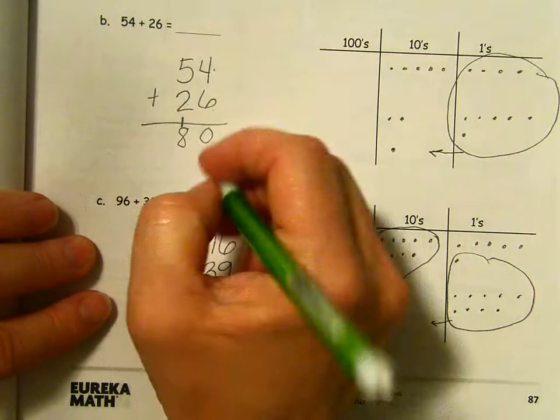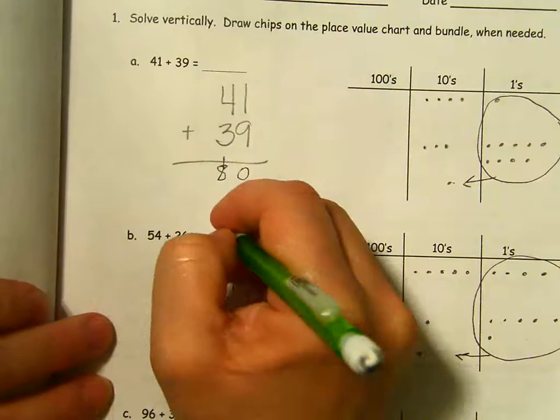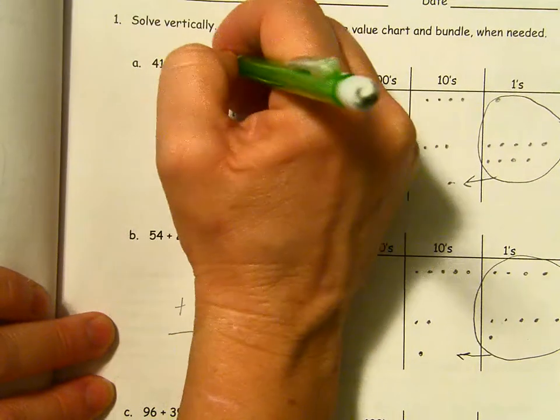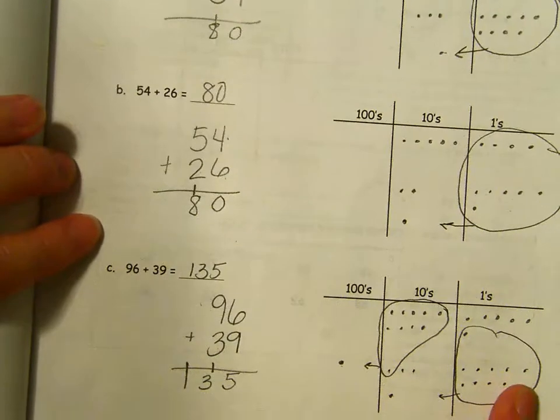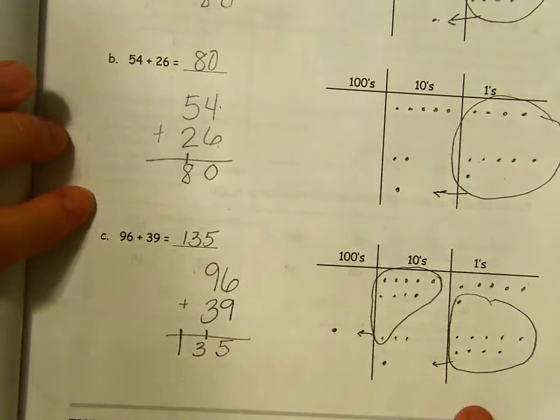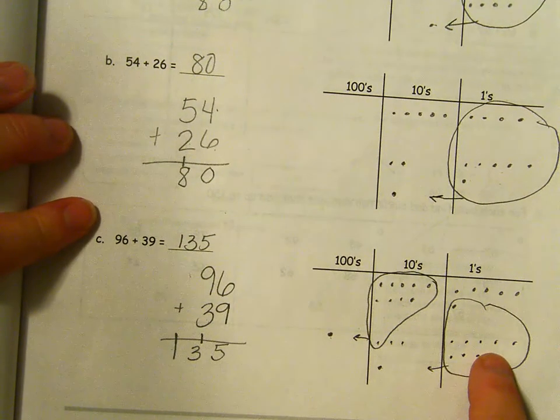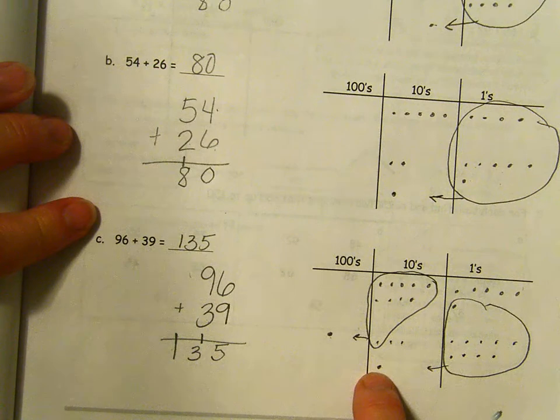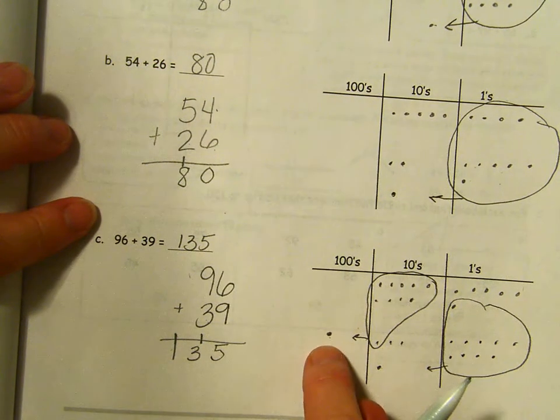Now we can certainly write those answers up here. The sums. But you don't have to. 96 plus 39 equals 135. Here we composed twice. We composed a group of 10 ones to make a 10 and then we composed a group of 10 tens to make a 100.